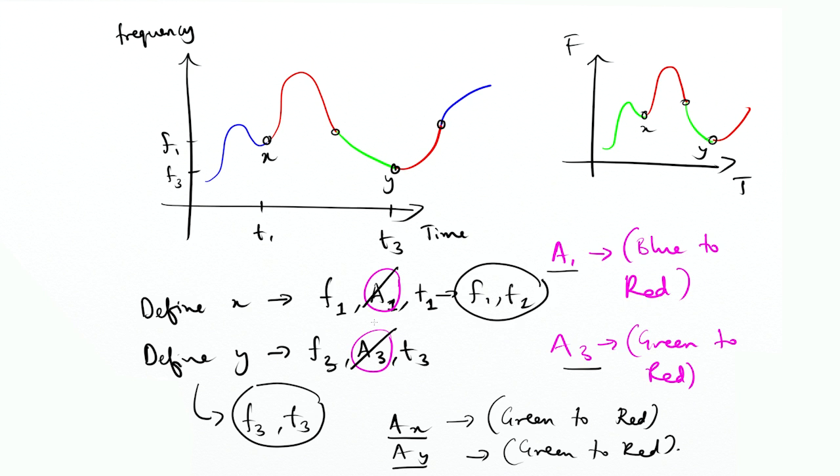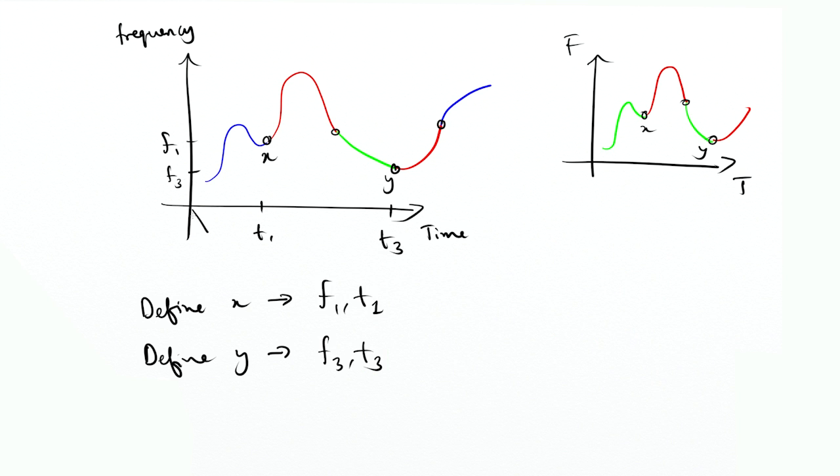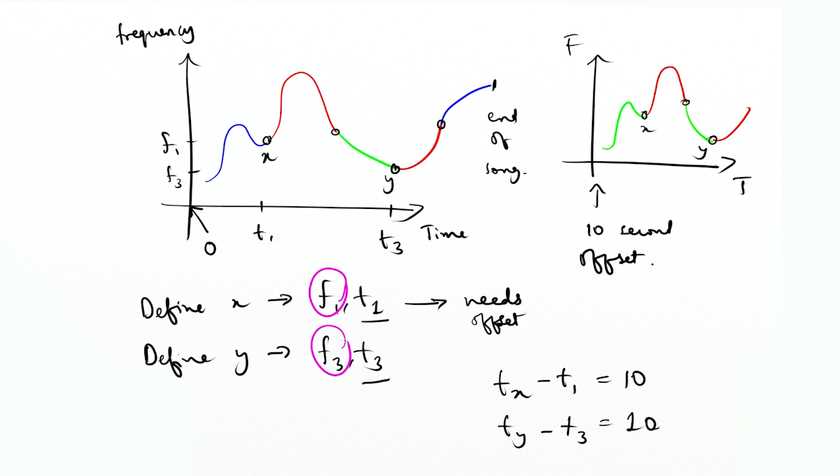Now x and y are defined by the frequency and time. But the most important thing is that the time component is not fixed. When you get a clipping you are not sure what is the offset of this given clipping. So it might be 10 seconds off. That means the difference between t1 and tx is going to be 10 seconds and the difference between t3 and ty is going to be 10 seconds again. However the frequencies of fx and fy in the clipping are going to be the same as f1 and f3 in the song.